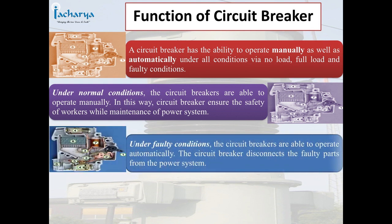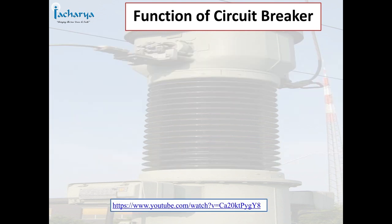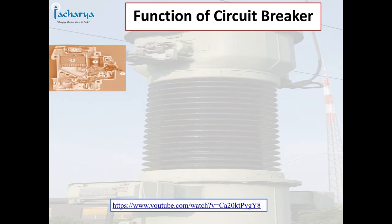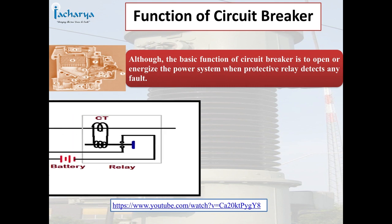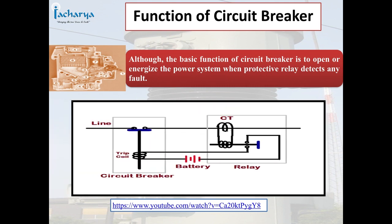Under faulty conditions, the circuit breakers are able to operate automatically. The circuit breaker disconnects the faulty parts from the power system. The basic function of the circuit breaker is to open or de-energize the power system when a protective relay detects any fault.